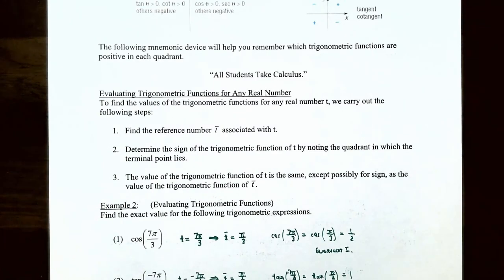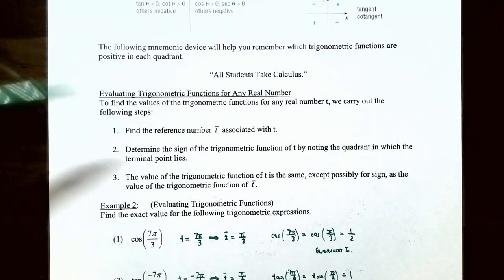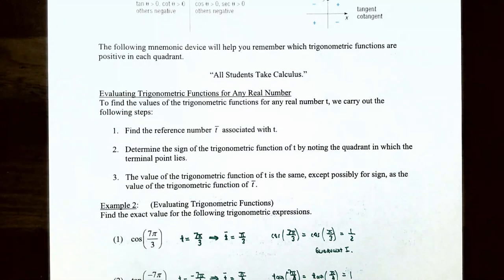To evaluate trigonometric functions for any real number, follow these steps. Step 1: find the reference number t-bar associated with the terminal point t. Step 2: determine the sign of the trigonometric function by noting which quadrant the terminal point lies in. Step 3: the value of the trigonometric function of t is the same — except possibly for the sign — as the value of the trigonometric function of the reference number t-bar.